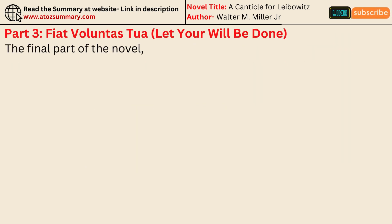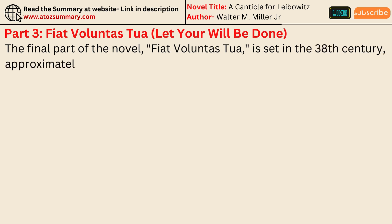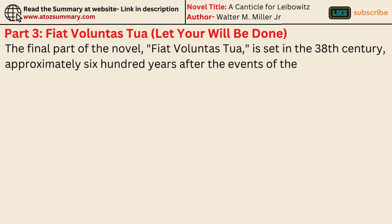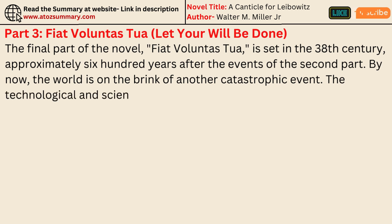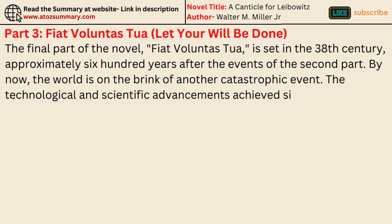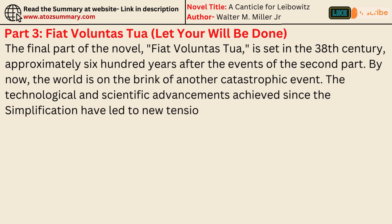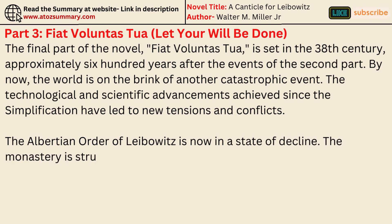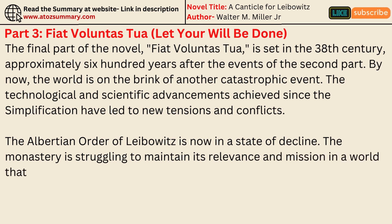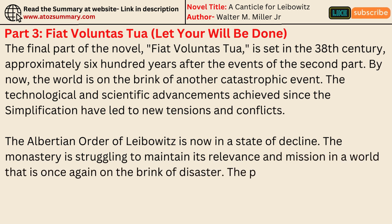The final part of the novel, Fiat Voluntas Tua, is set in the 38th century, approximately 600 years after the events of the second part. By now, the world is on the brink of another catastrophic event. The technological and scientific advancements achieved since the Simplification have led to new tensions and conflicts. The Albertian Order of Leibowitz is now in a state of decline, with the monastery struggling to maintain its relevance and mission in a world once again on the brink of disaster.